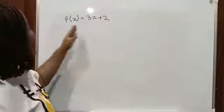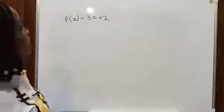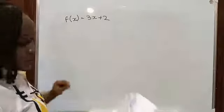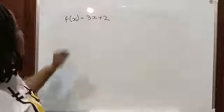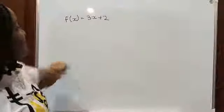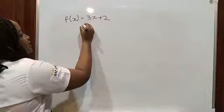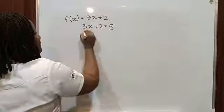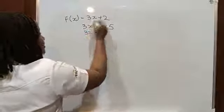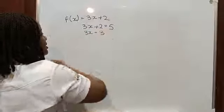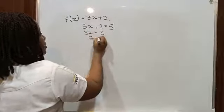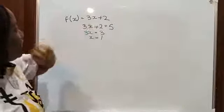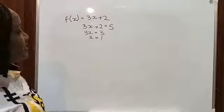Given f(x) = 3x + 2, find the value of x whose image is 5. We set 3x + 2 = 5, so 3x = 5 − 2 = 3, giving x = 1. So for x = 1, the image of f(x) will give us 5.